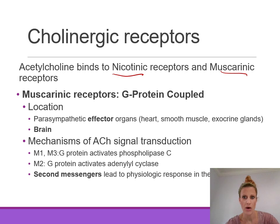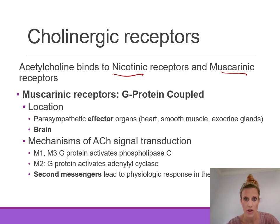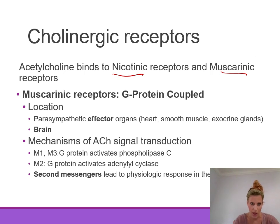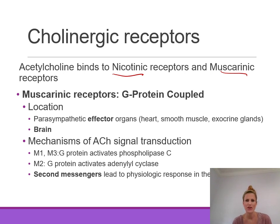Muscarinic receptors are G-protein coupled receptors — not ion channels like nicotinic receptors. There are five subtypes: M1, M2, M3, M4, and M5. M1, M2, and M3 are the ones that have been functionally classified and whose functions we understand. Different receptor subtypes are found in different locations and concentrations.